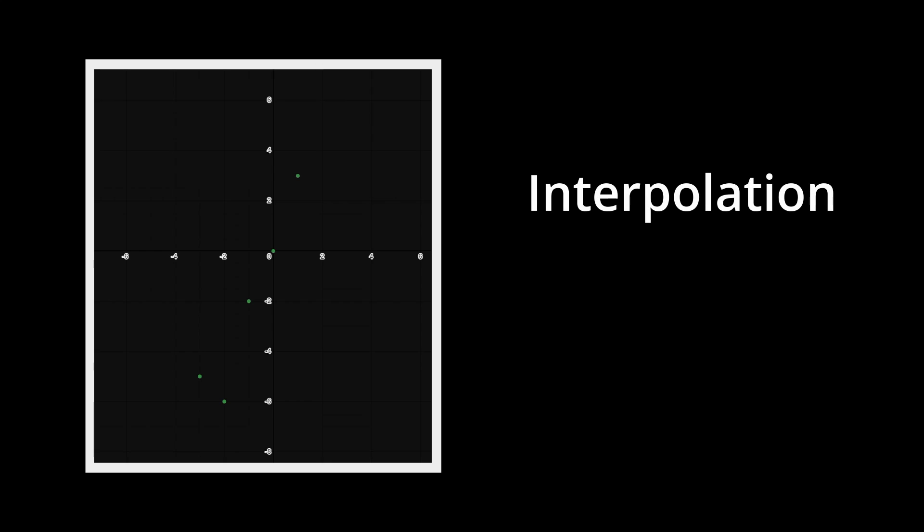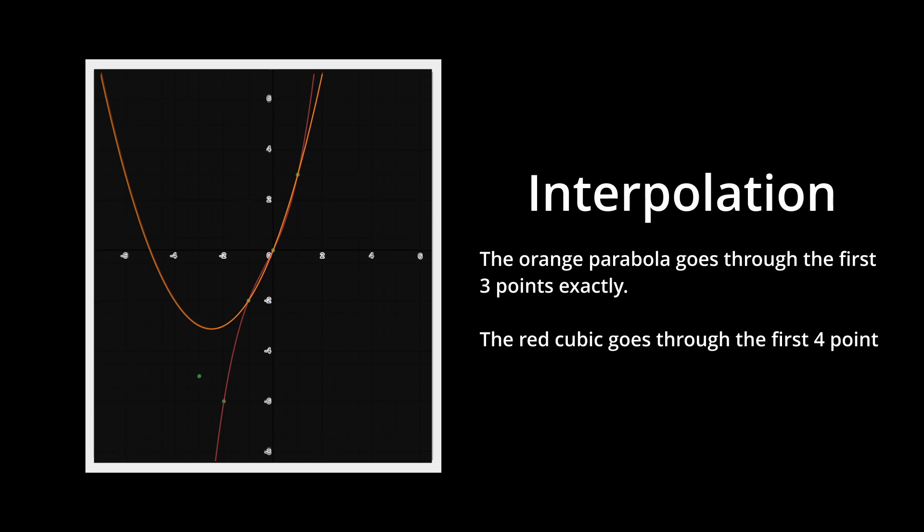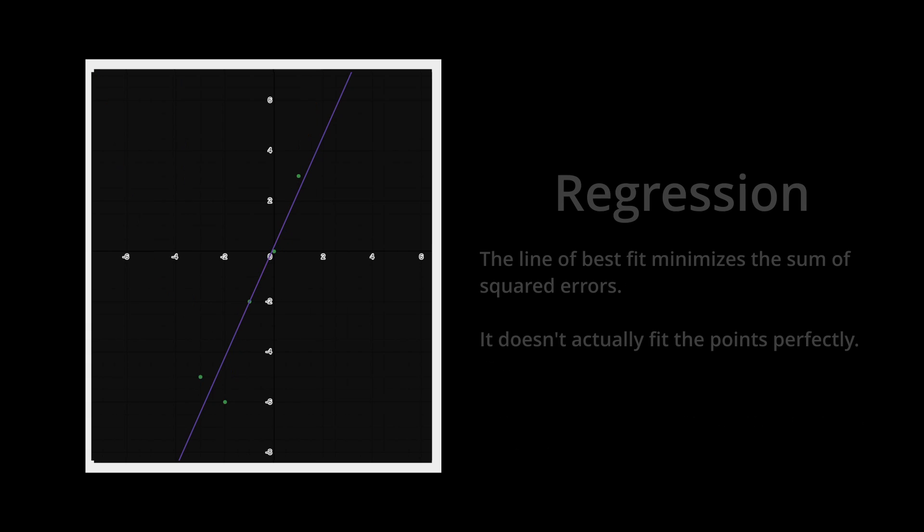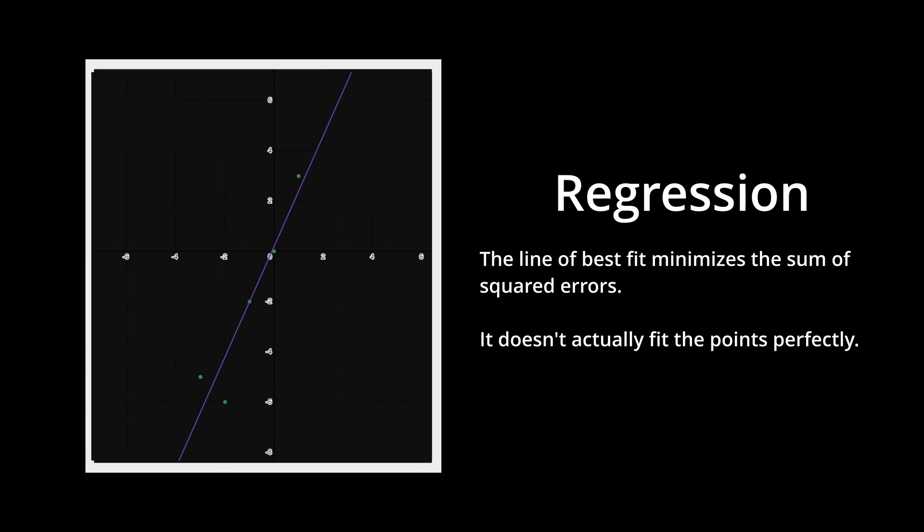Now we just need to figure out the coefficients for the odometry equations. A concept we first must understand is interpolation. Interpolation is the process of creating a curve that goes through all the points in a list exactly. This is different from regression, like the line of best fit, where we just get a function that matches the data closely. With interpolation, we literally go through every point.